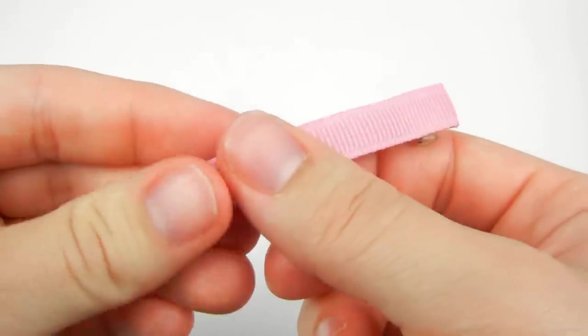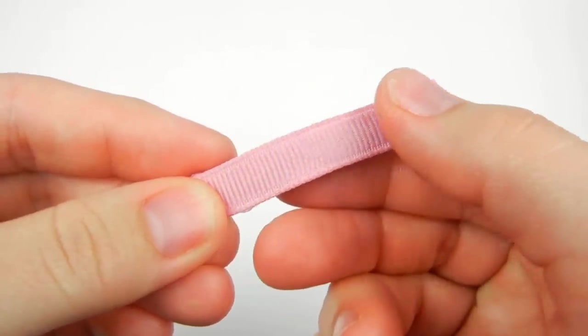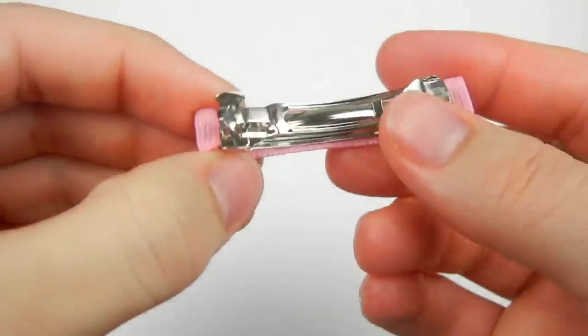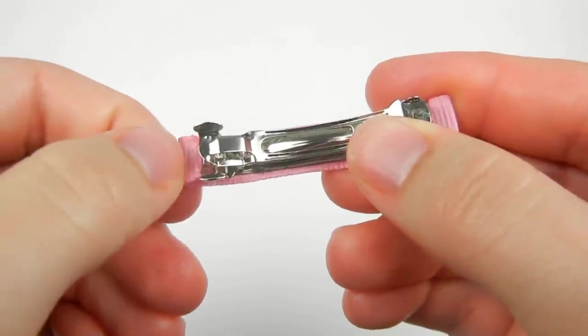Then you're going to bring your ribbon down. Smooth it over. Like that. And then you'll put a little bit more glue on the end of the ribbon.